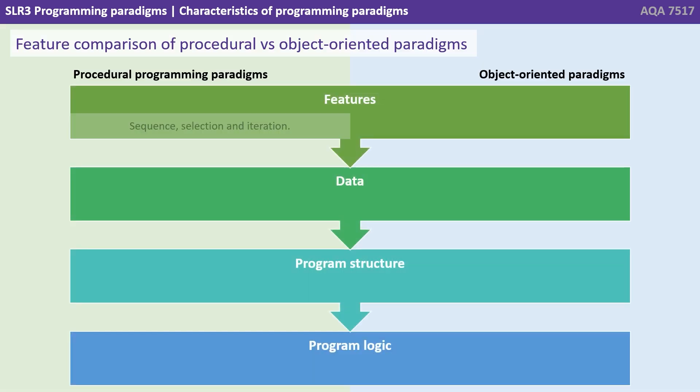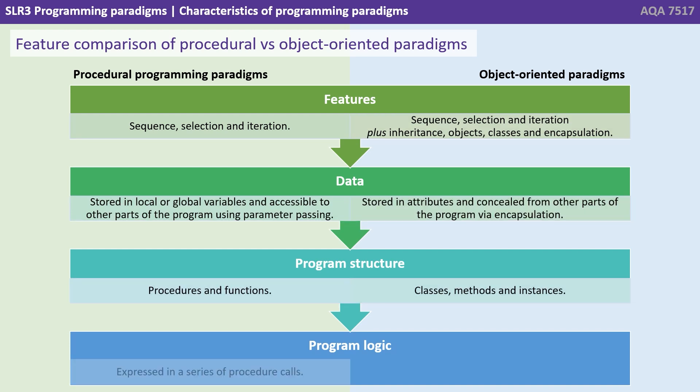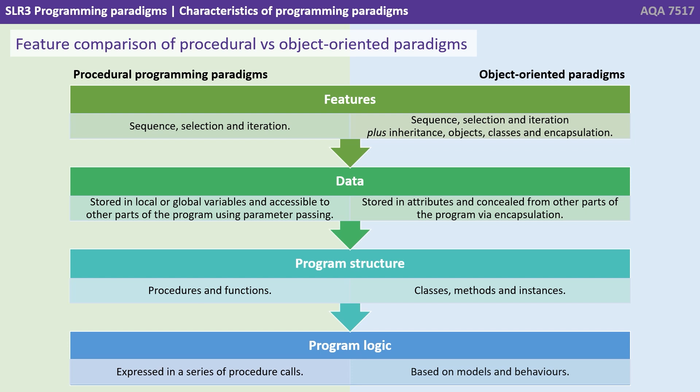It's important you understand some of the main features and differences between these two programming paradigms. Let's break this down into features, data, program structures and program logic. Procedural programming focuses on sequence, selection and iteration. Object orientated programming focuses on sequence, selection and iteration plus the concepts of inheritance, objects, classes and encapsulation. In procedural programming, data is stored in local or global variables and accessible to other parts of the program using parameter passing. With object orientation we store data in attributes and we conceal it from other parts of the program via a method called encapsulation.